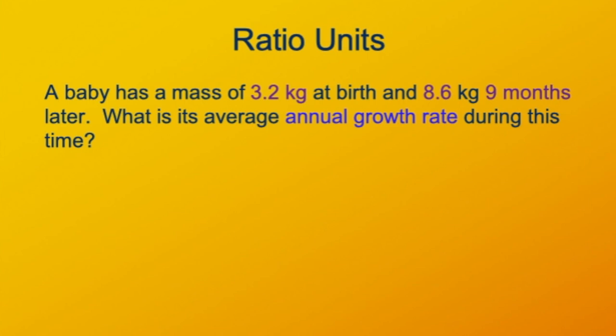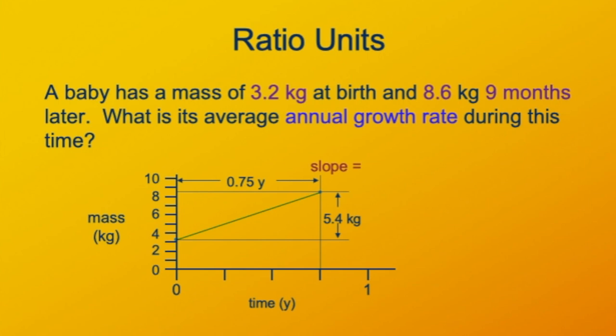So we have those two points here, and the growth rate is going to be the slope of the line connecting those two points. The slope is the rise, 5.4 kilograms, divided by the run, 0.75 years, for an annualized growth rate of 7.2 kilograms per year. Of course, babies don't really grow at a constant rate for nine months.